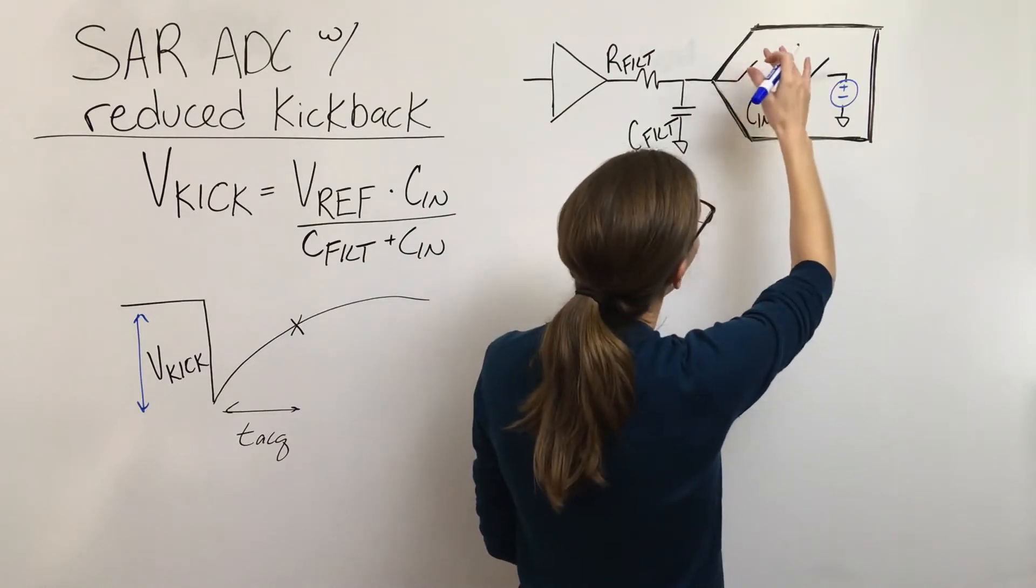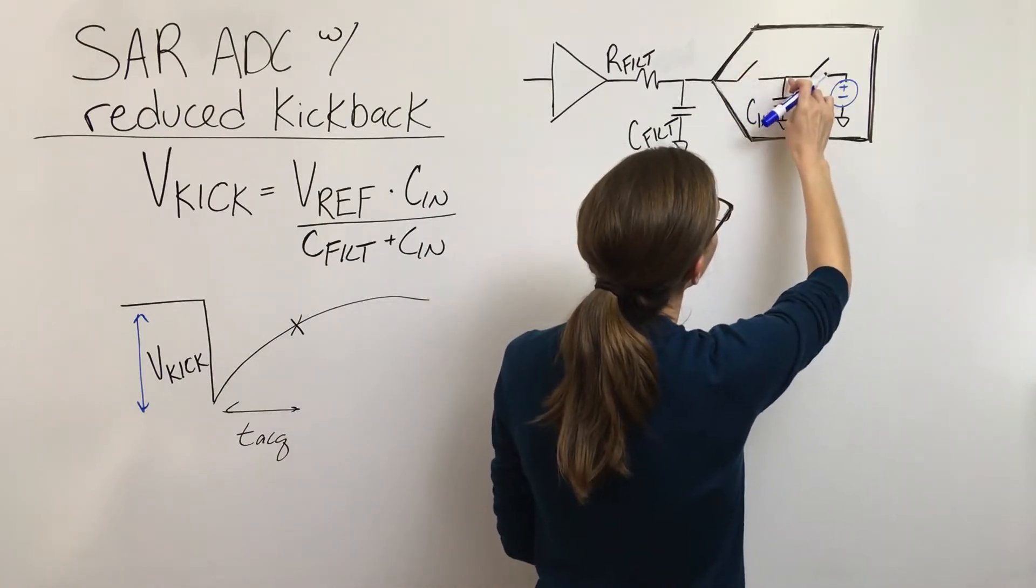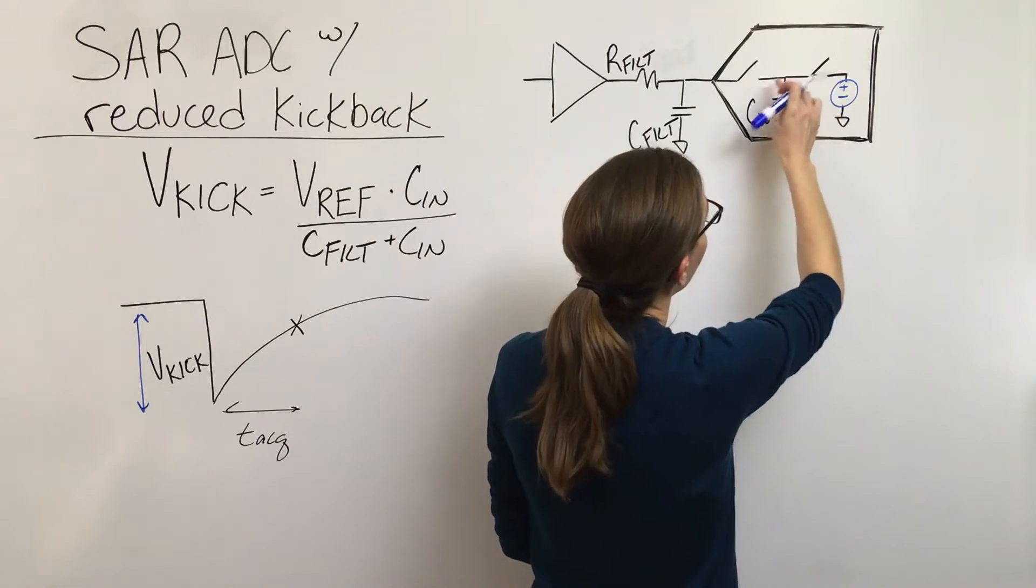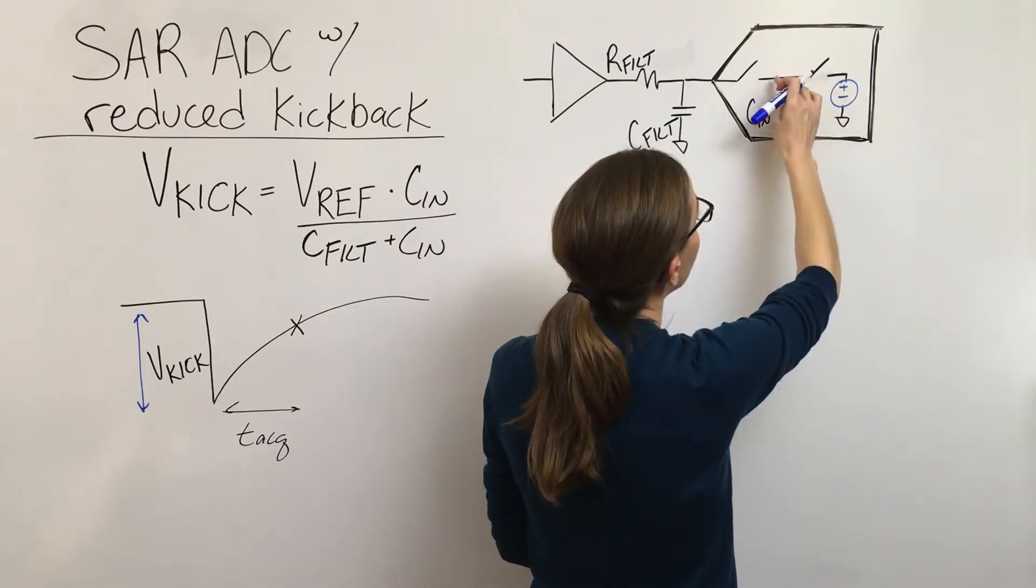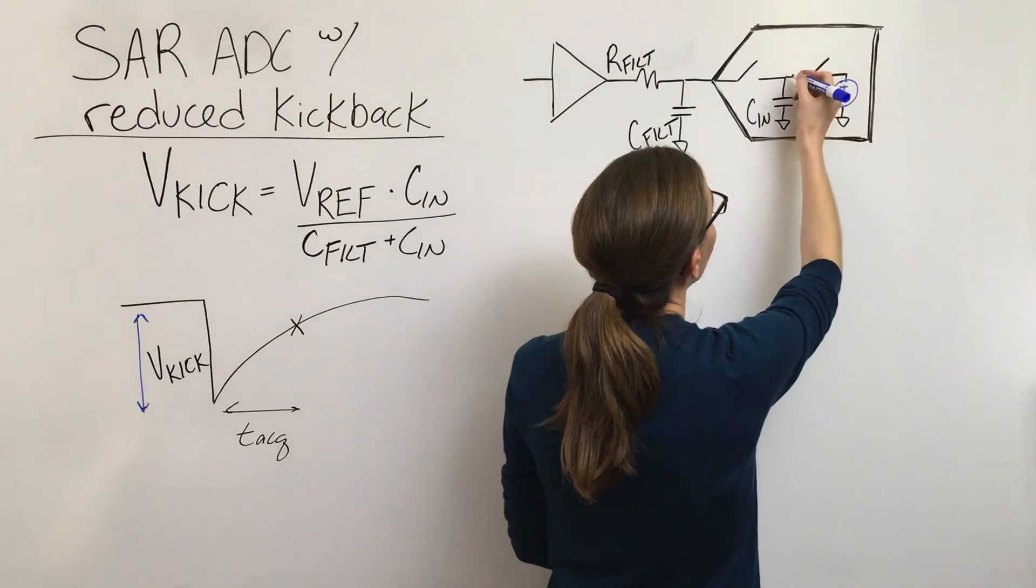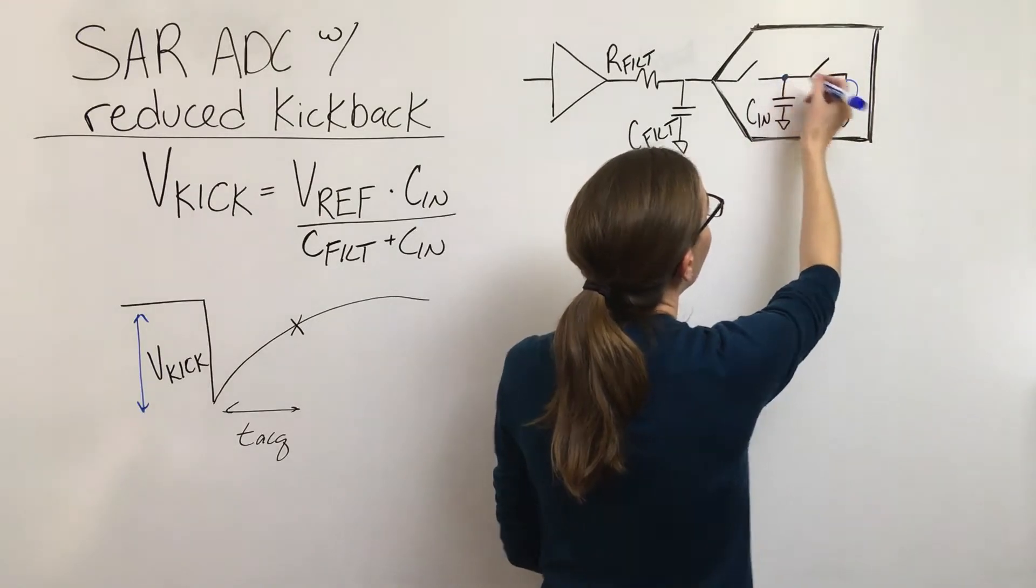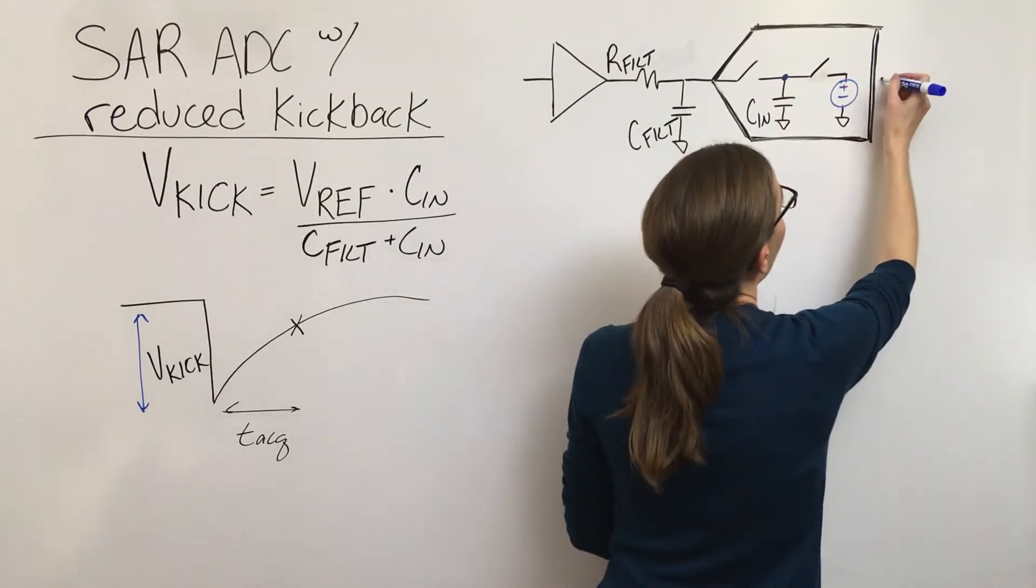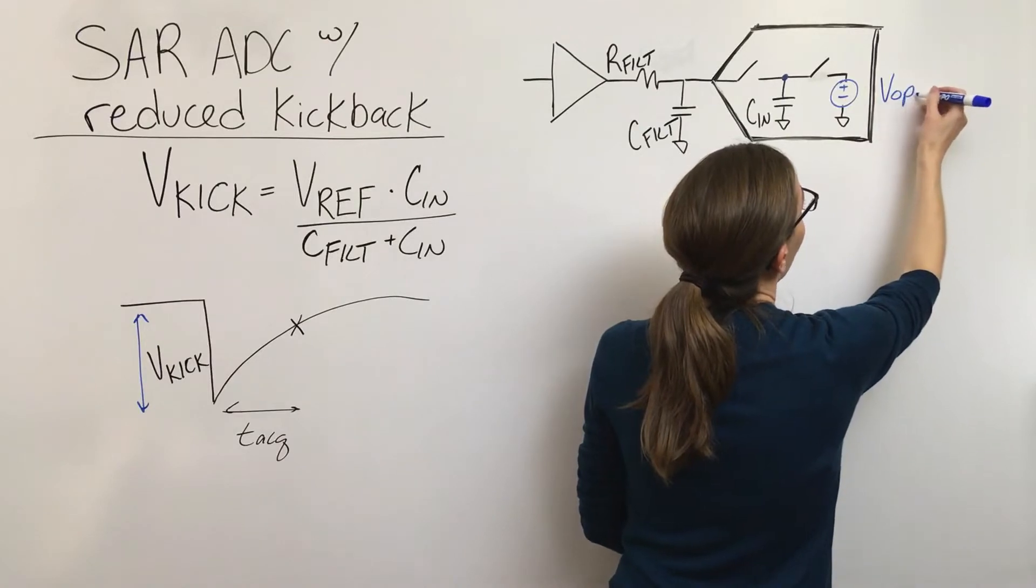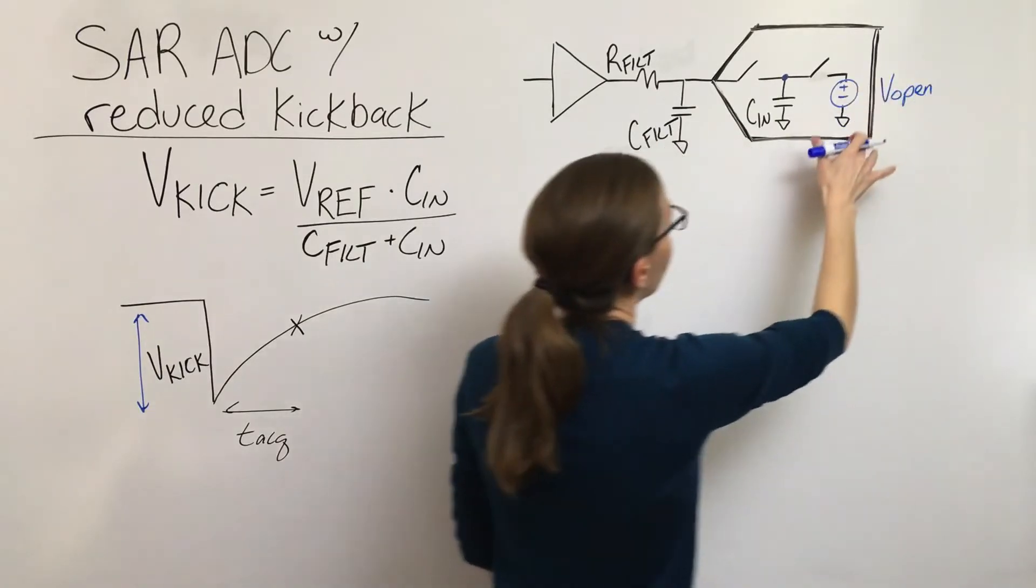And so when the switch opens, the acquisition or I'm sorry, the conversion takes place and this voltage changes. But then there is a circuit that tries to drive this node back to the voltage it was at when the switch opened, so when conversion started.